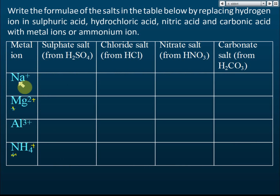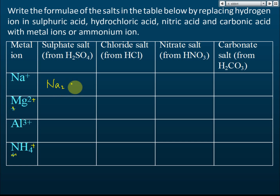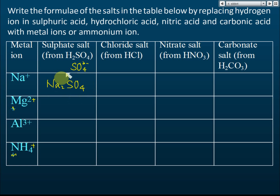Now let's write the formulas for salts formed between these metal ions and acids. When sodium forms a salt with sulfuric acid, it becomes sodium sulfate, Na₂SO₄ — because sulfate has a 2⁻ charge and sodium has a 1⁺ charge, so two sodium ions combine with one sulfate ion. When sodium reacts with hydrochloric acid, it forms sodium chloride, NaCl.